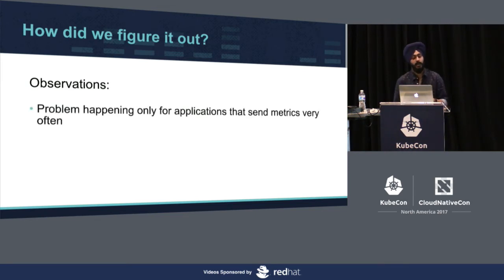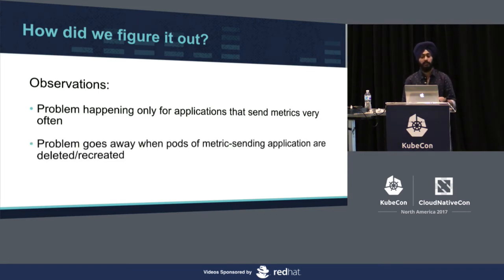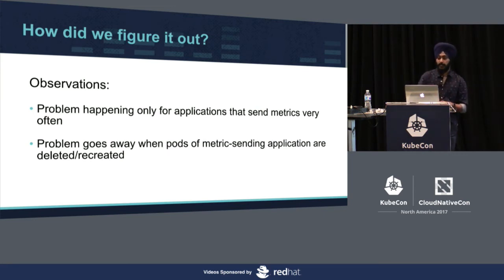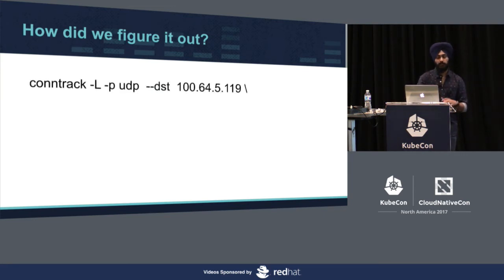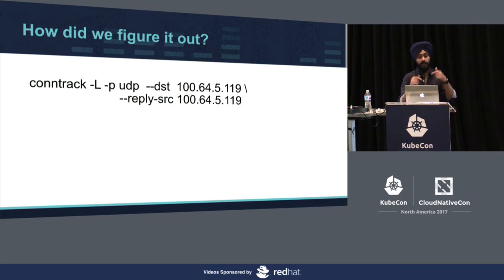Then we observed that the problem happens only for applications that send metrics very often, and it goes away when the pods of metrics-sending applications are deleted. This hinted that it has something to do with conntrack and could be related to the TTL of the entries. So we ran a conntrack command to list entries with the destination of the Statsy service IP.